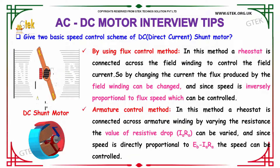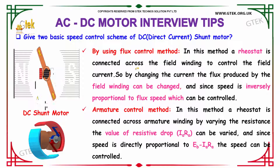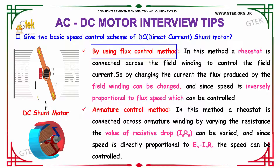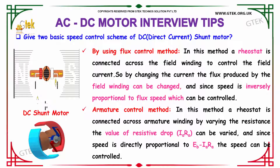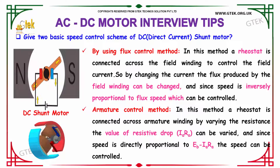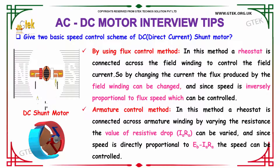Give two basic speed control schemes of the DC shunt motor. The two basic speed control schemes of the direct current shunt motor are: the first scheme is by using flux control methodology, and the second one is the armature control method. In the flux control method, a rheostat is connected across the field winding to control the field current. By changing the current, the flux produced by the field winding can be changed, and since the speed is inversely proportional to the flux, speed can be controlled.